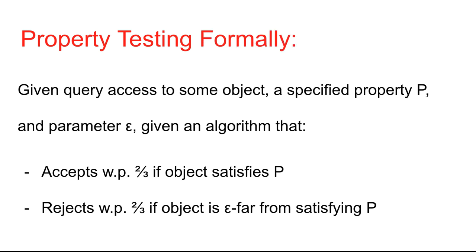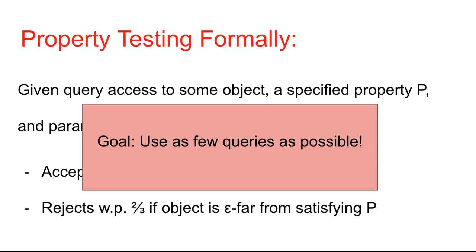Formally, our setting is the following. We're given query access to some object, a specified property p, and a parameter epsilon. Our goal is to give an algorithm that accepts with probability two-thirds if the object satisfies p, and rejects with probability two-thirds if the object is epsilon-far from satisfying p. Our goal is to use as few queries as possible — in particular, we don't want to access the whole object.